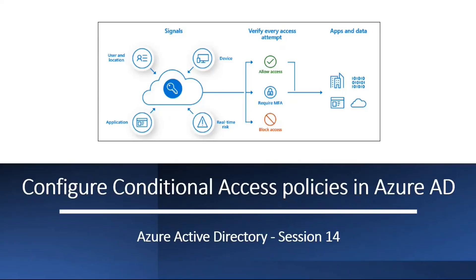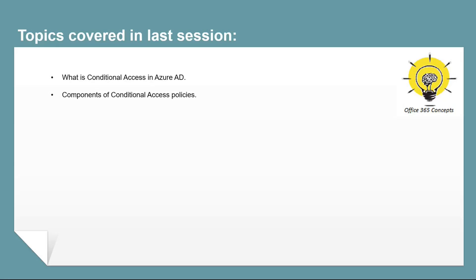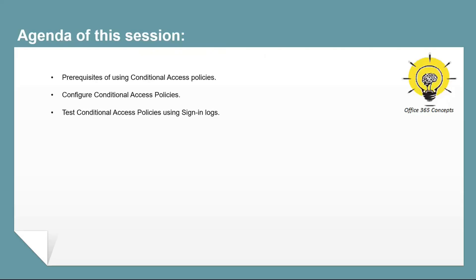Hi guys, welcome to the next video of this entire series of Azure Active Directory. In the last video, we talked about Conditional Access Policies — how they work and their components. In this video, I will demonstrate how to configure Conditional Access Policies, discuss the prerequisites, cover three use case scenarios, and show you how to track Conditional Access Policy logs.